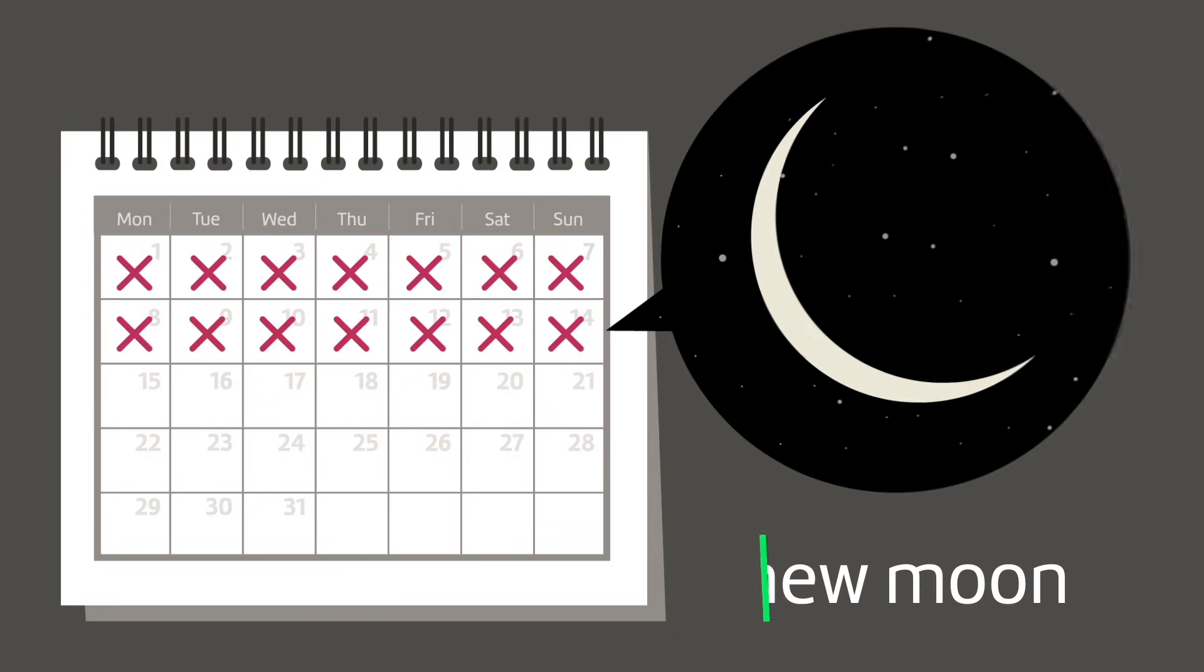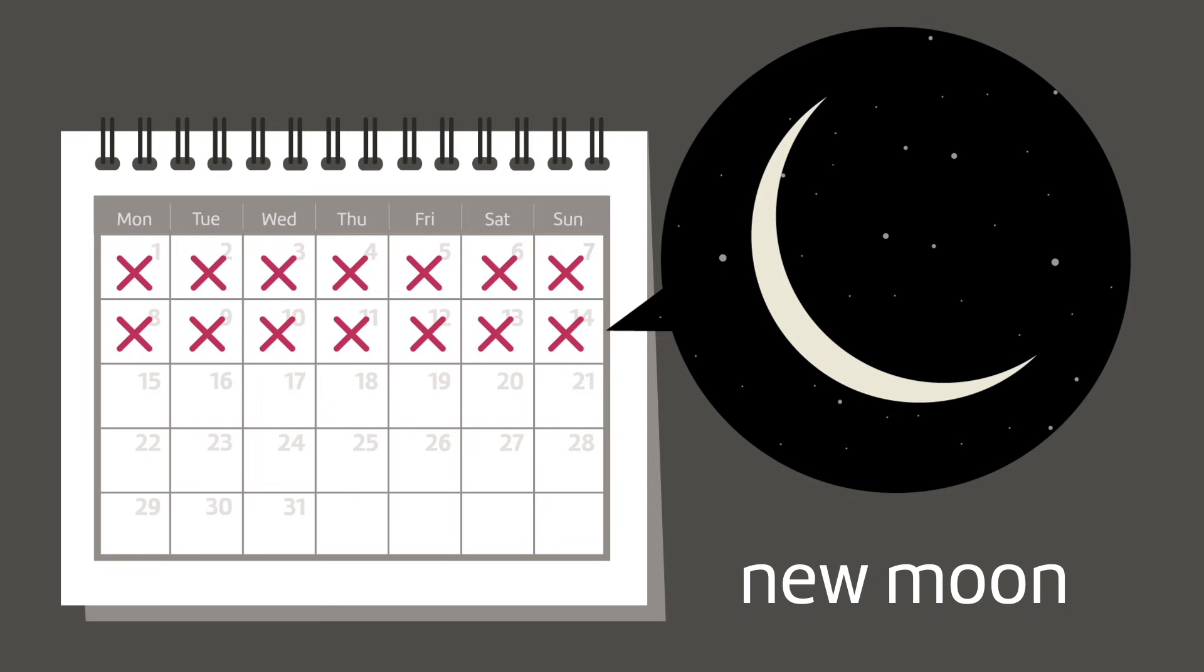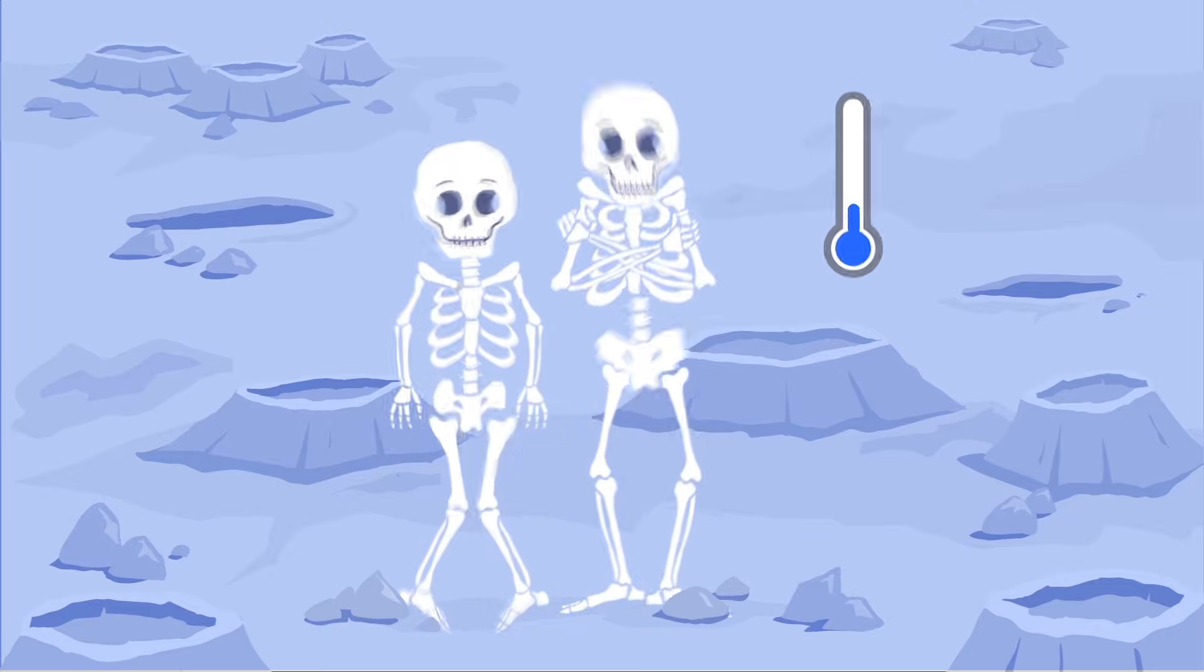But 14 days later, at New Moon, you'd be in the middle of the long lunar night, and the temperature would have plummeted to around minus 170 degrees.